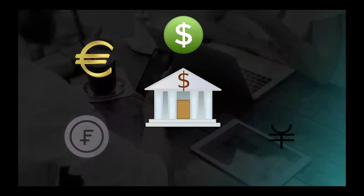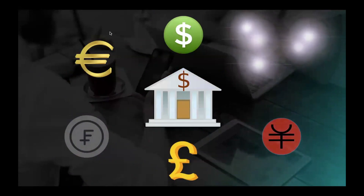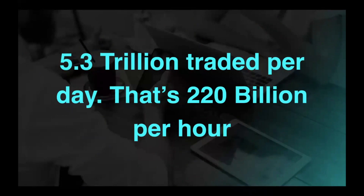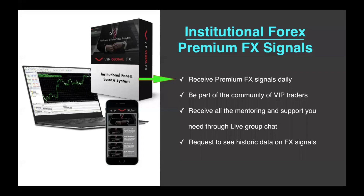Let's talk about the premium FX signals for the forex market — trading global currencies like the dollar to the euro, Swiss franc, British pound, Japanese yen, or peso. The forex market is huge: $5.3 trillion traded per day, that's $220 billion per hour — absolutely incredible. The signal you receive from Unify for forex comes in daily and you get to be part of a community of VIP traders. It was set up with the beginner in mind to keep things really simple, with live group chat, mentoring, and support. You can also request to see historic data on the FX signal to see the value being provided.